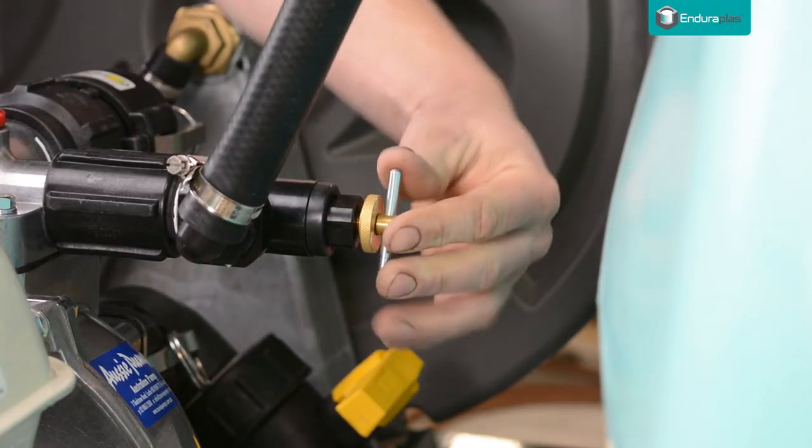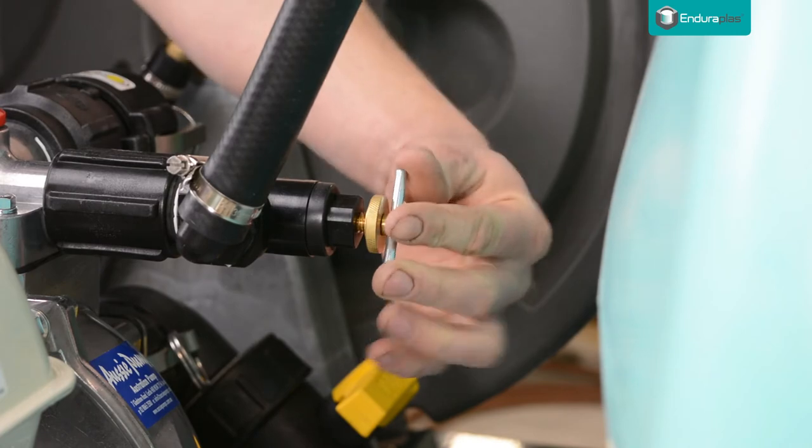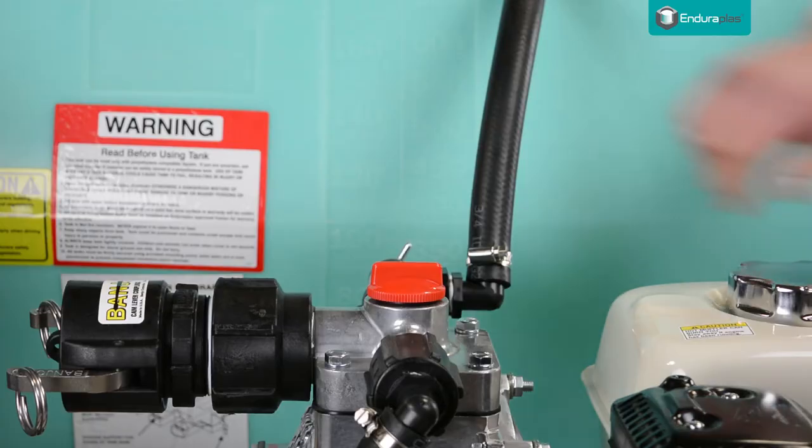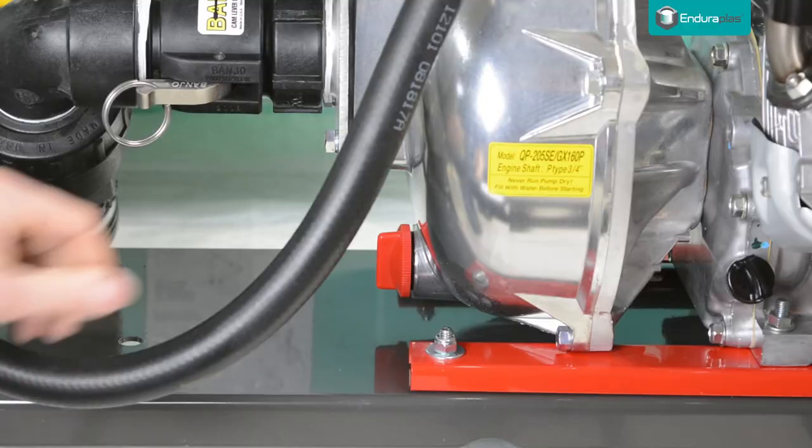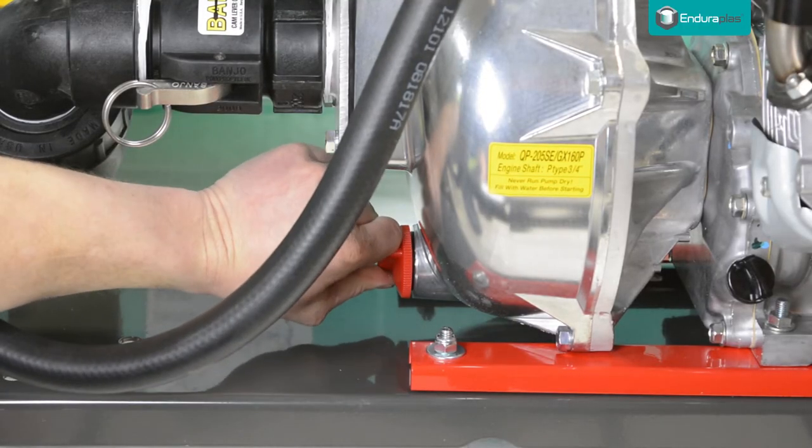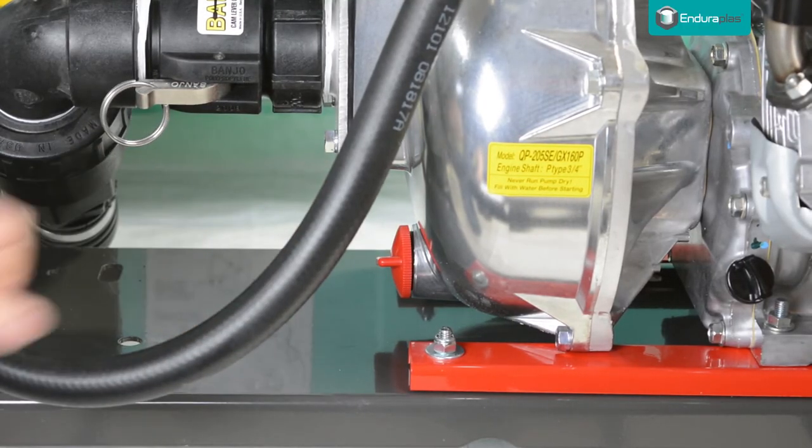Open the pressure relief all the way by turning the T-handle counter-clockwise. Before starting the engine, make sure both the drain plug and prime plug are tightened securely to properly hold the sealing O-rings in place.